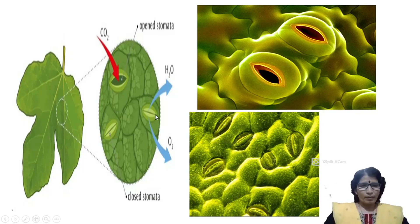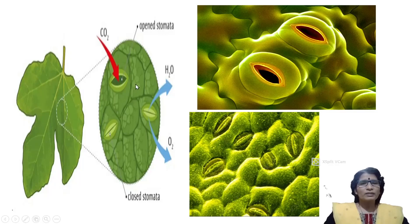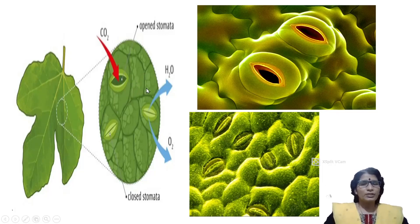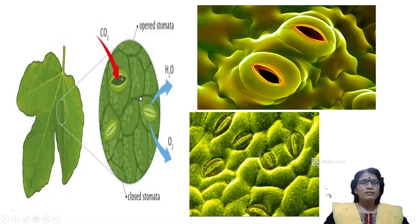The function of stomata is gaseous exchange. Through stomata, plants take carbon dioxide and release oxygen during photosynthesis. During respiration, plants take oxygen and release carbon dioxide. Transpiration also takes place through the stomata — transpiration means plants lose water in the form of vapor.